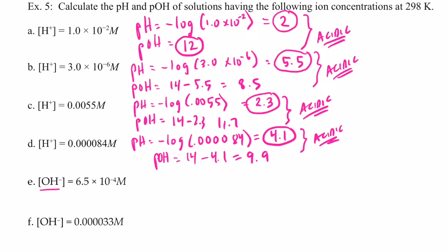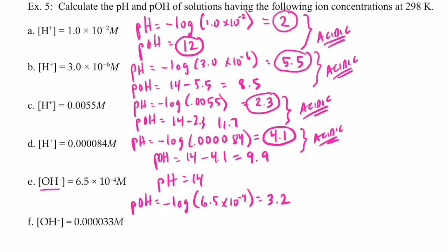Alright, what if we start with the hydroxide ion concentration? This time, let's find the pOH first. Isn't that equal to the negative log of the hydroxide concentration, which is 6.5 times 10 to the negative 4th? So negative log of 6.5 times 10 to the negative 4th — it looks like my pOH is going to be 3.2. What's my pH going to be? Well, remember the sum of pH and pOH has to equal 14. So 14 minus 3.2 is going to give me 10.8. The pH is greater than 7, so we would say this solution is basic.